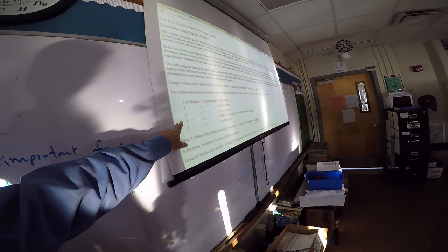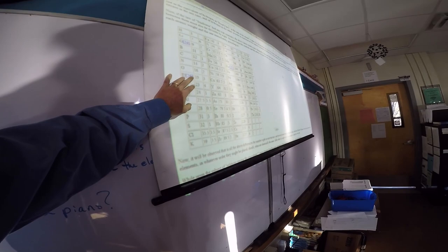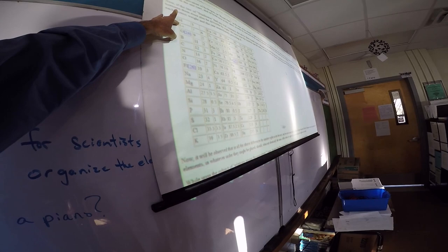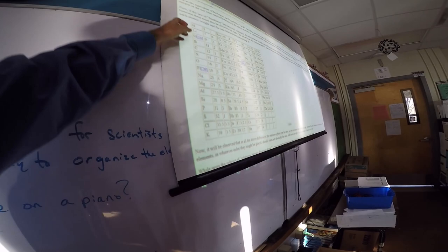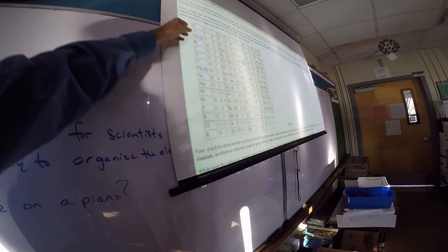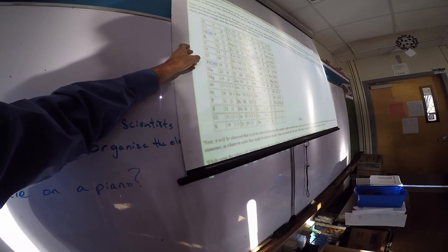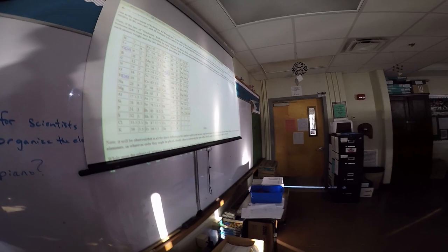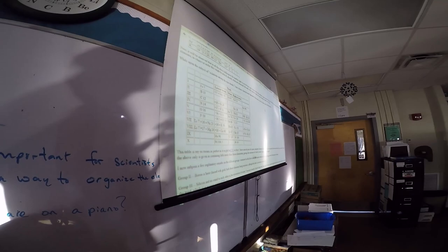In 1863, Newlands documented an element not yet discovered — cesium — noting 'the equivalent of a metal not yet discovered.' John Newlands also published a table in 1864 showing the octave periodicity pattern from hydrogen to fluorine, and then sodium to chlorine. He's got this pattern going in the wrong direction compared to our current periodic table, but he was gradually moving toward how we organize elements today.